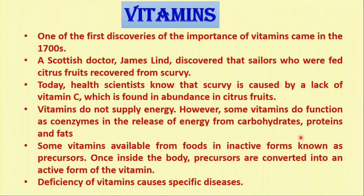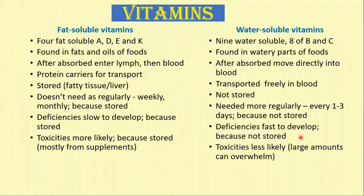We need vitamins and these should be coming from our food. Vitamins are classified into fat-soluble vitamins and water-soluble vitamins. There are four fat-soluble vitamins: A, D, E and K. These are found mostly in fats and oils of food. After absorption, they enter lymph and then blood protein carriers for transport. They are stored in fatty tissue or liver, not required regularly — maybe weekly or monthly because they are stored. So their deficiencies are slow to develop, but toxicity is more likely because they are stored.